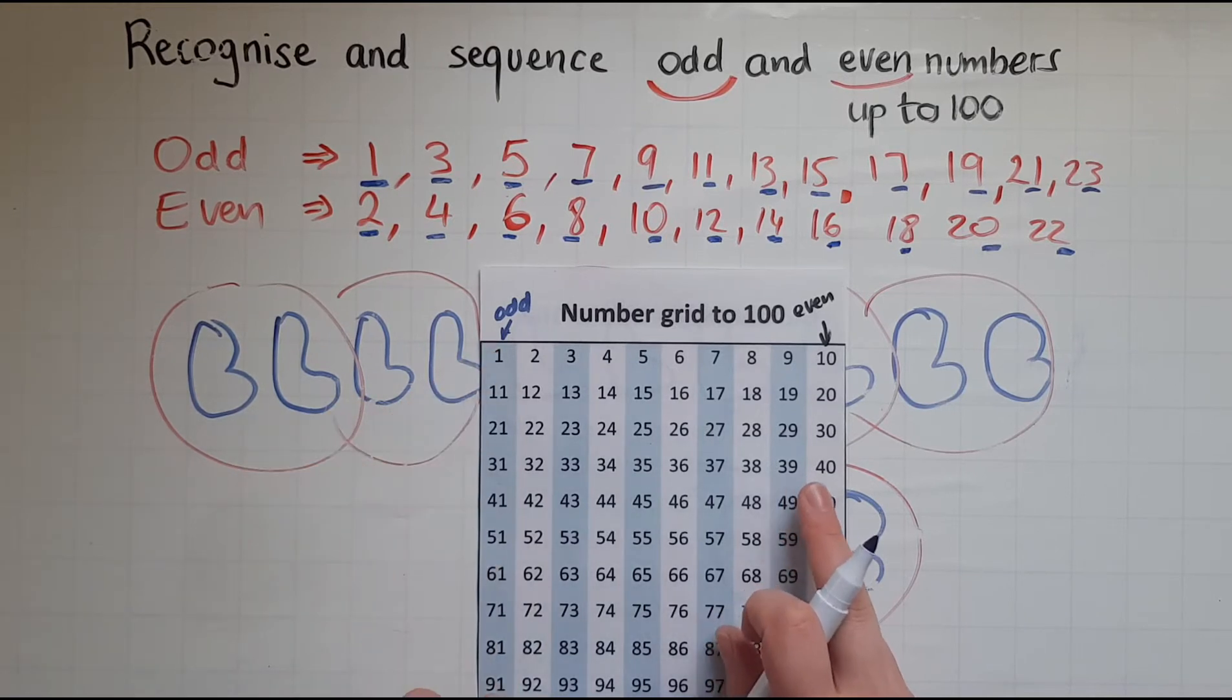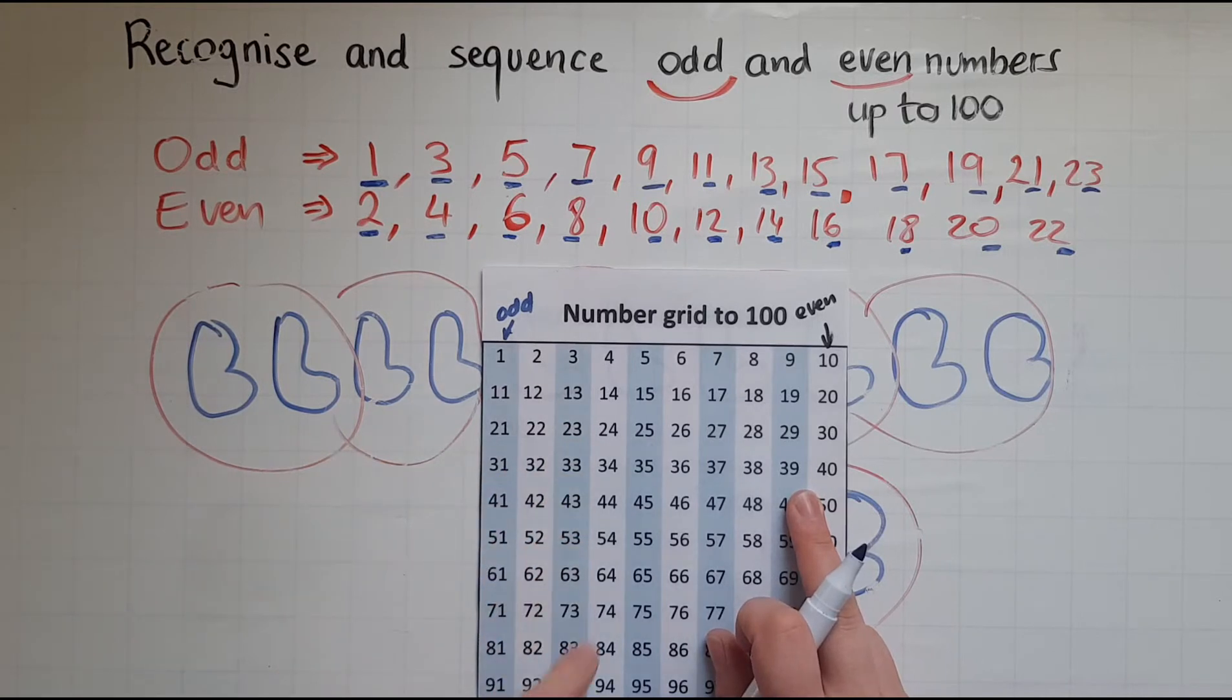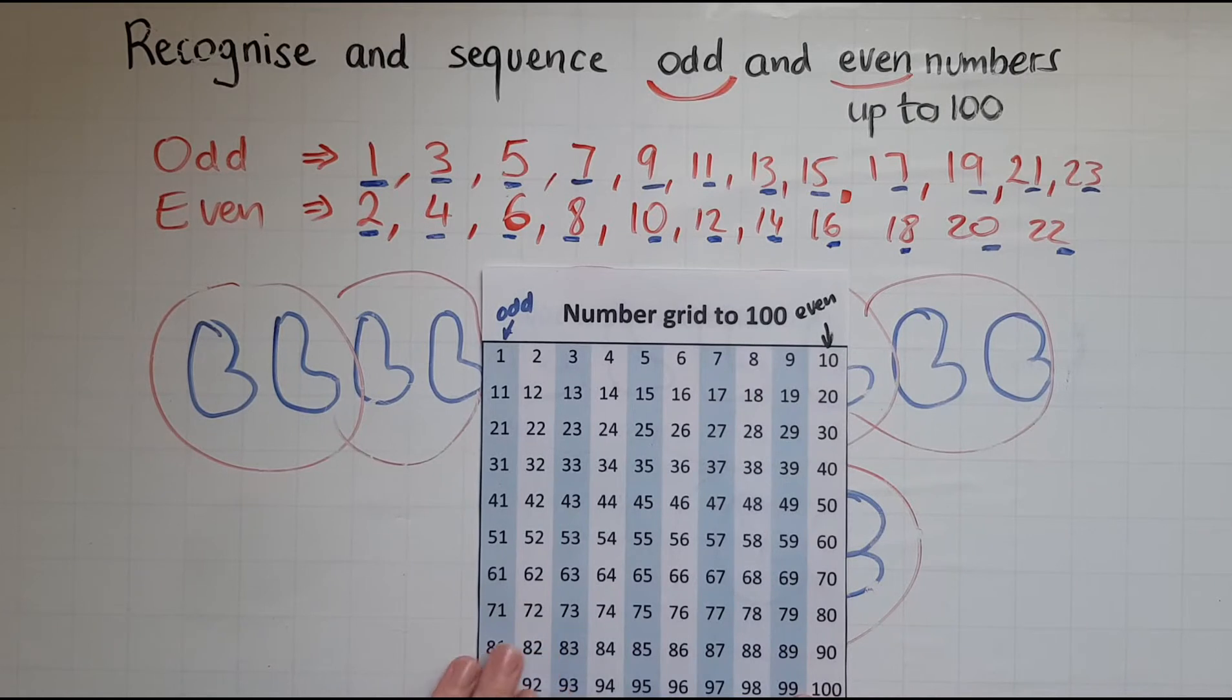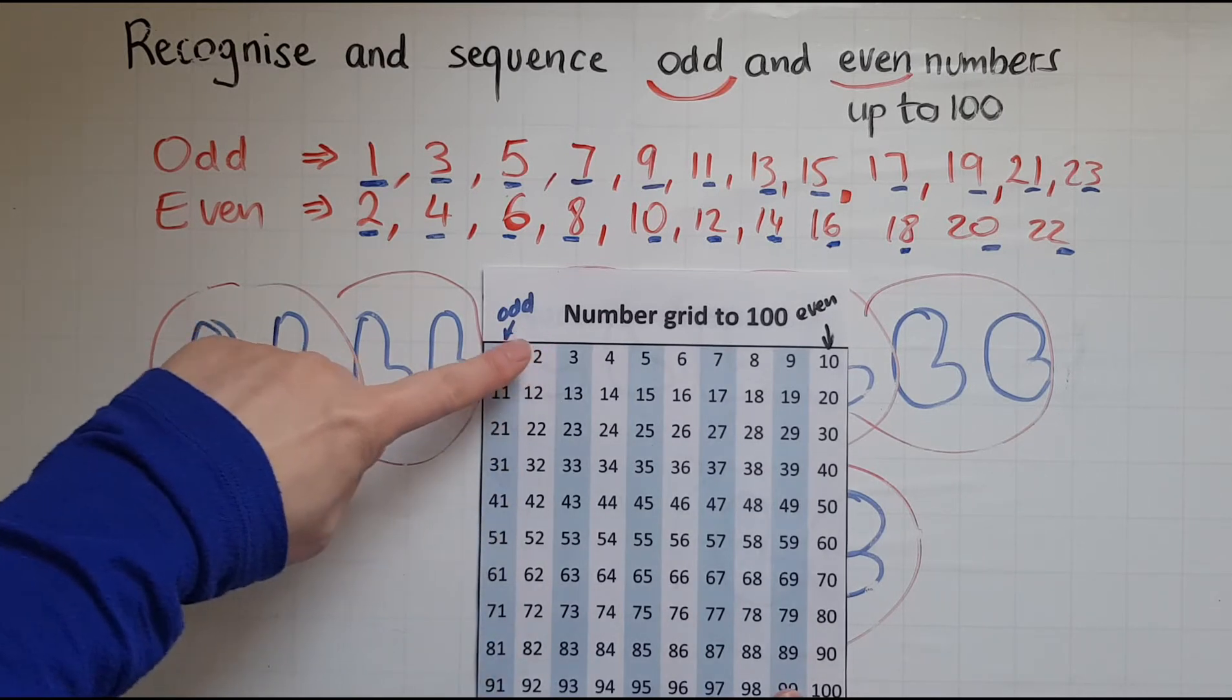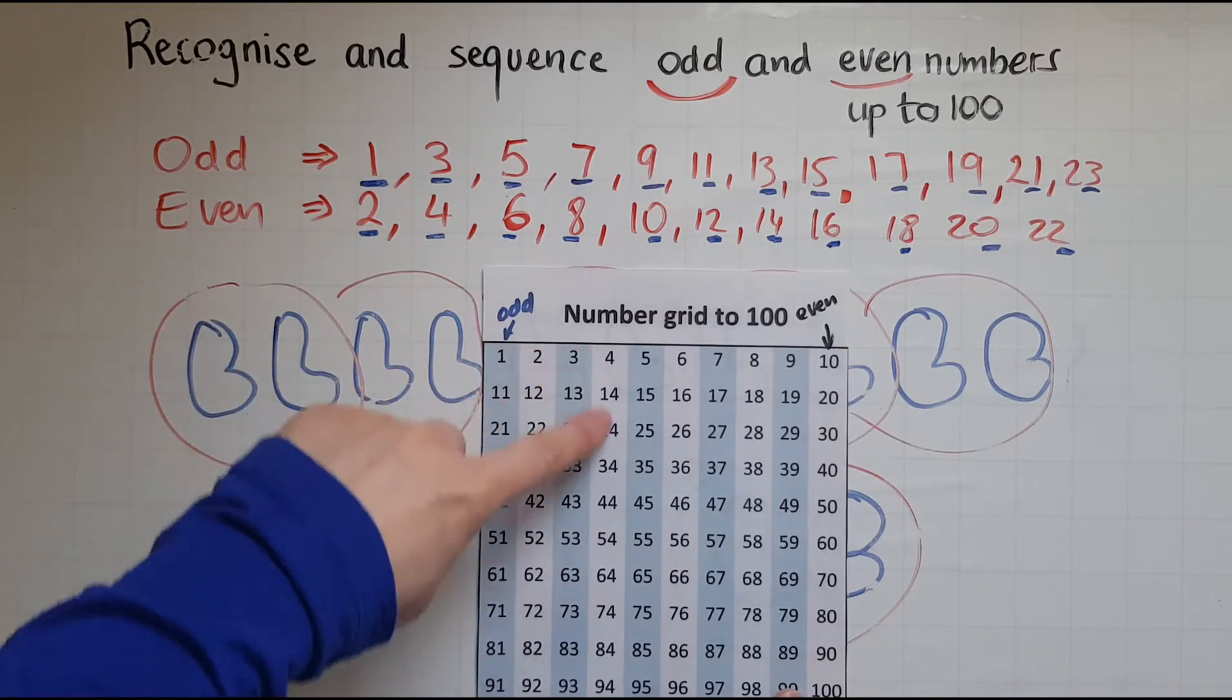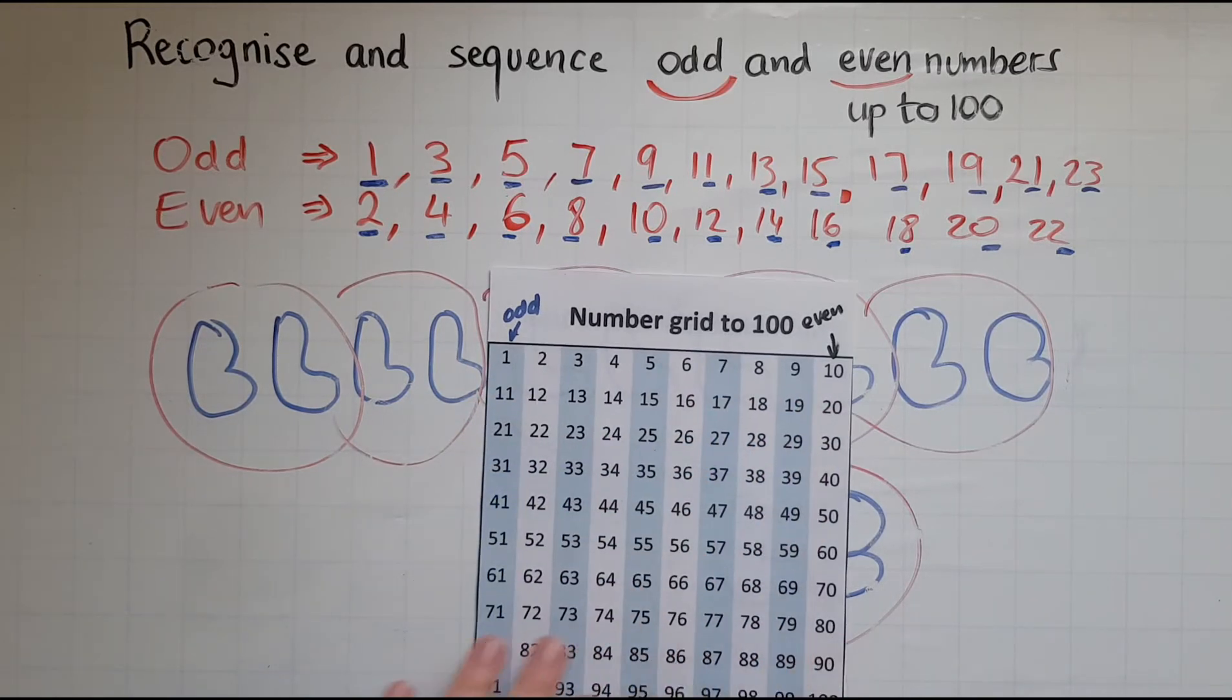So are all these ending with 3 and ending with 5, 7 or 9. So these numbers in the columns that are colored in blue are all odd. And the numbers in the columns in white are all even.